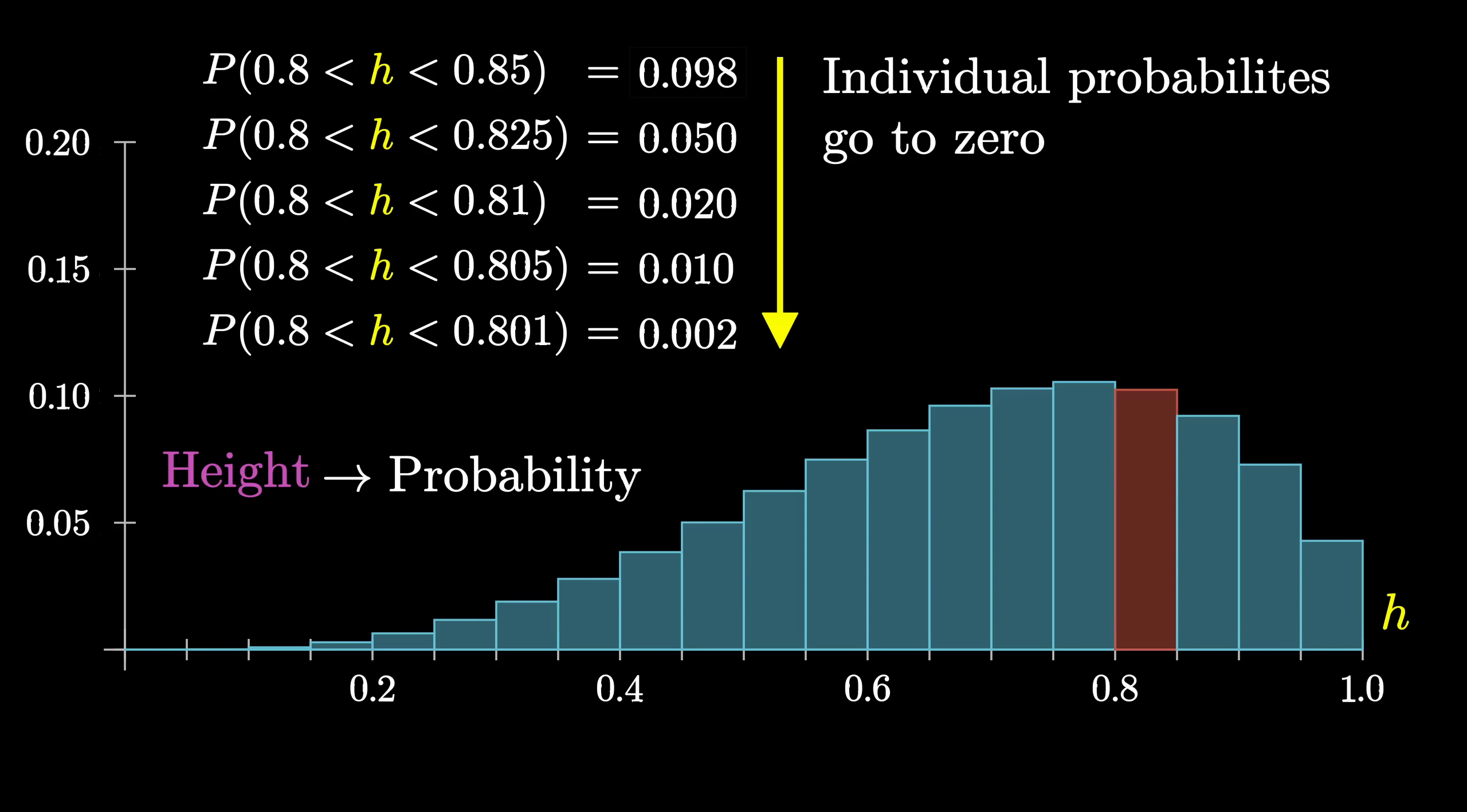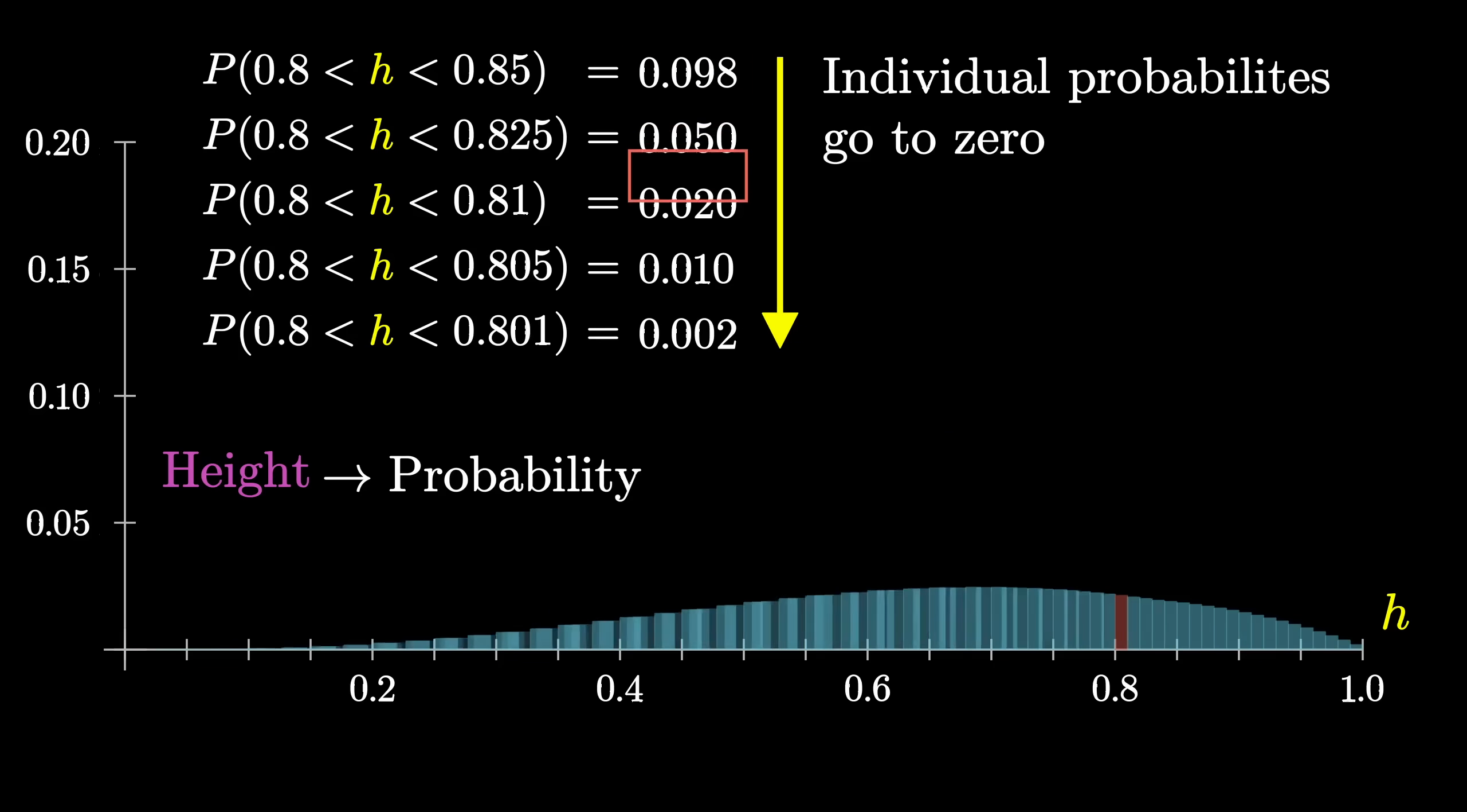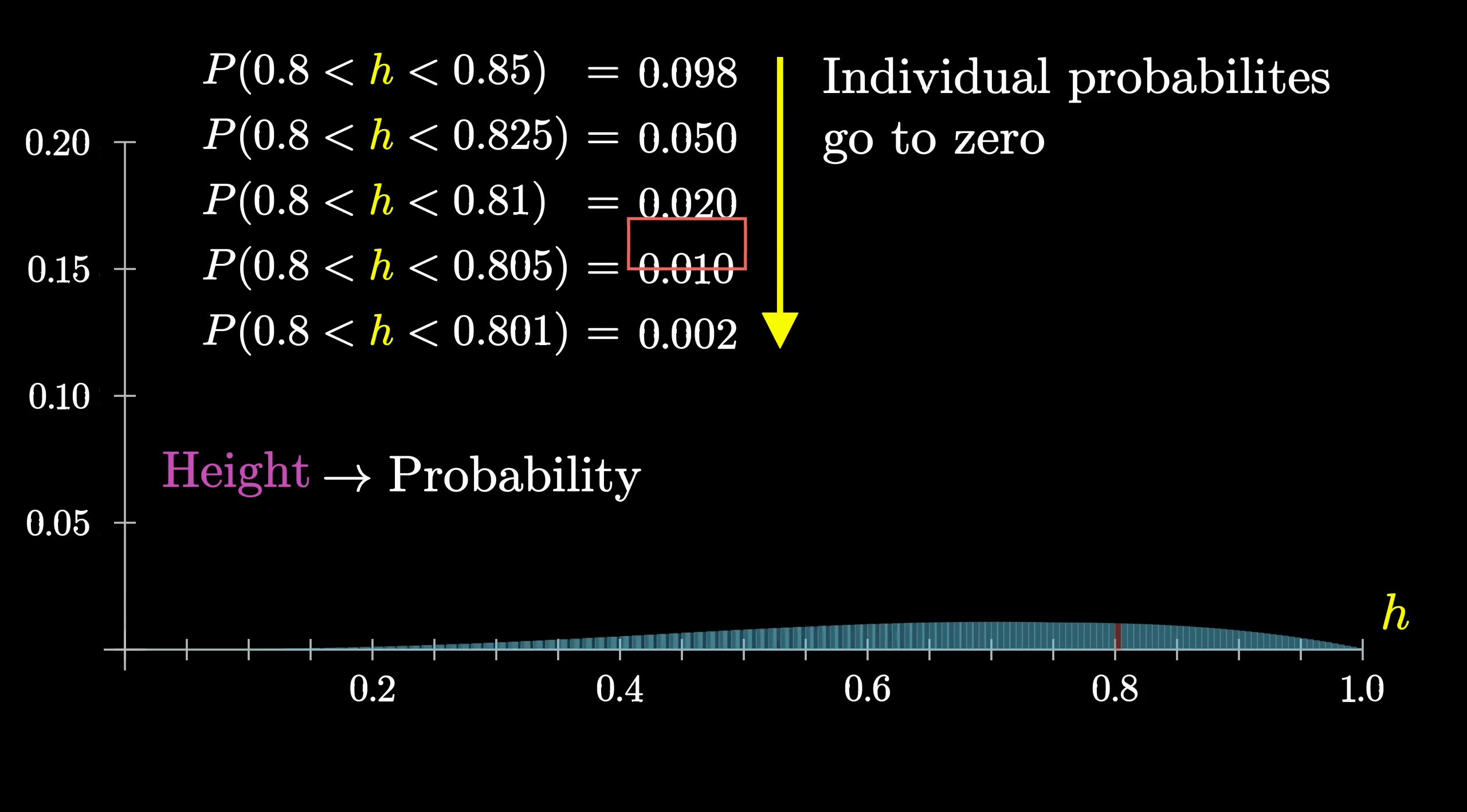If, on the other hand, we had let the heights of the bars represent probabilities, everything would have gone to 0. So in the limit, we would have just had a flat line giving no information about the overall shape of the distribution.